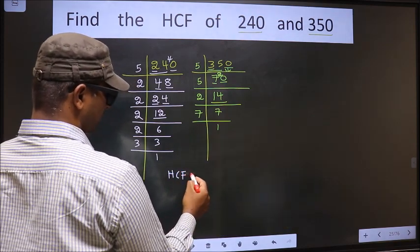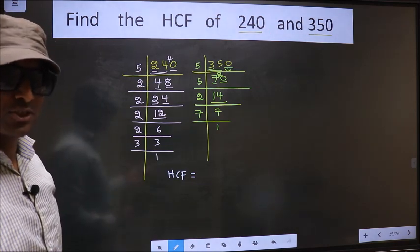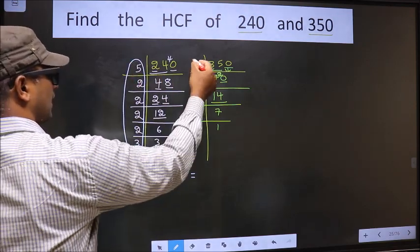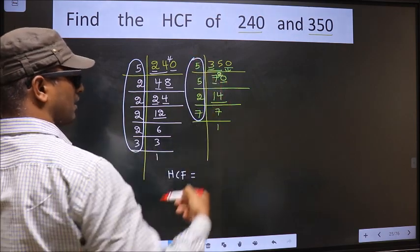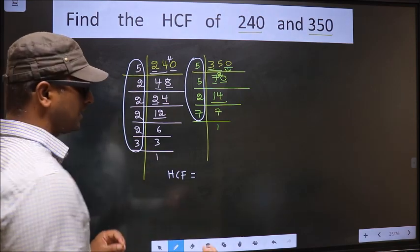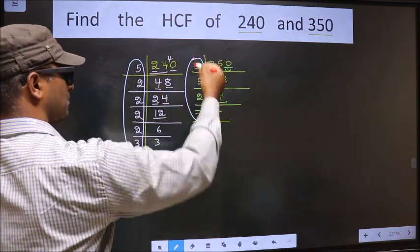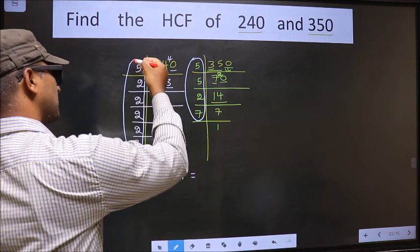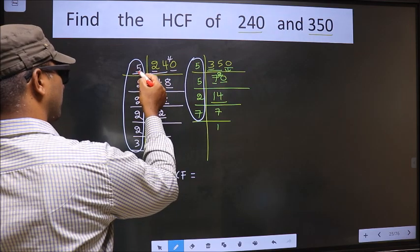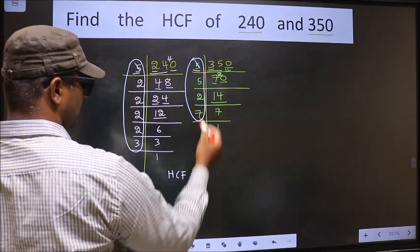So the HCF is the product of numbers which should be present in both factorizations — here and also here. Now let us find the numbers which are present in both. Starting with the number 5. Do we have 5 here? Yes. So we cut 5 right here.